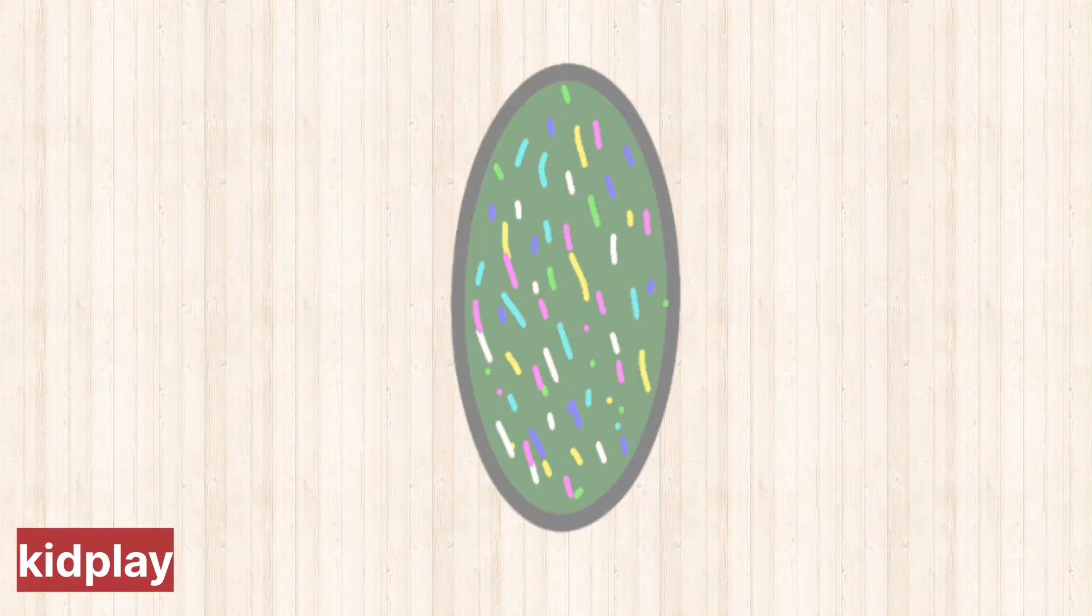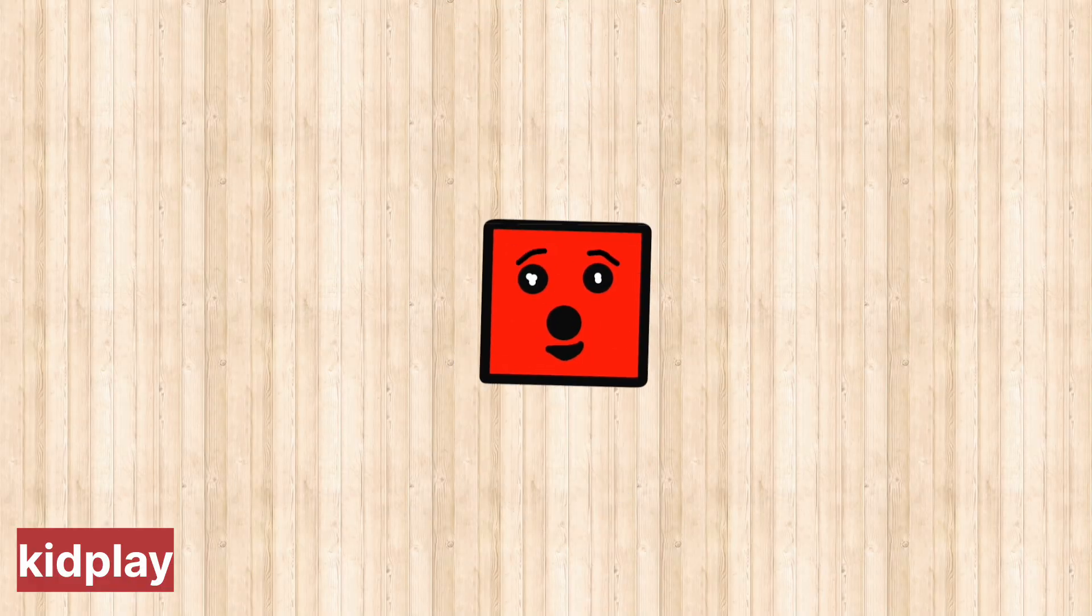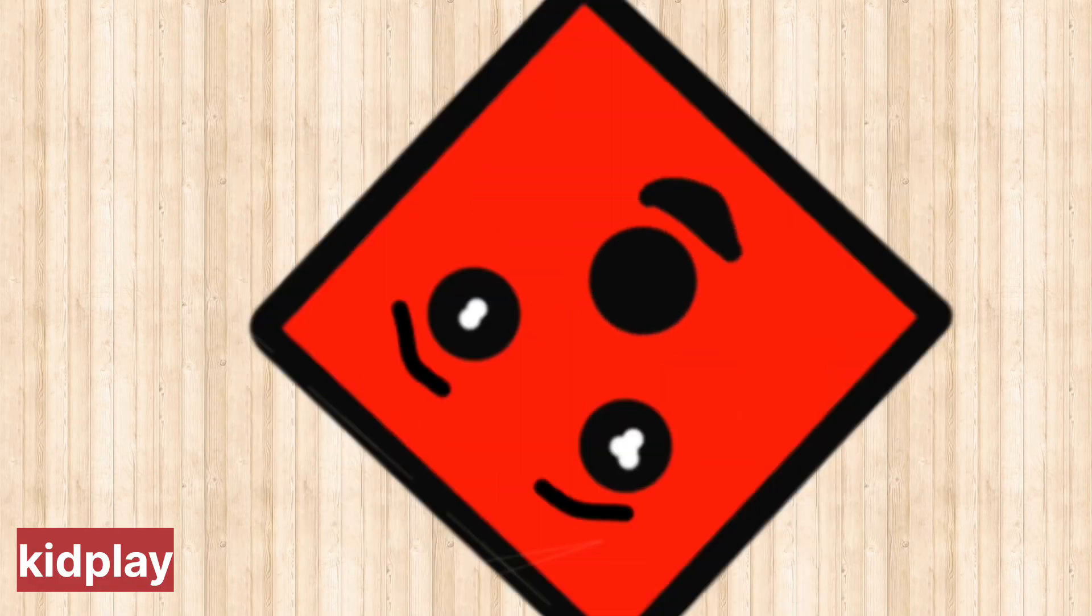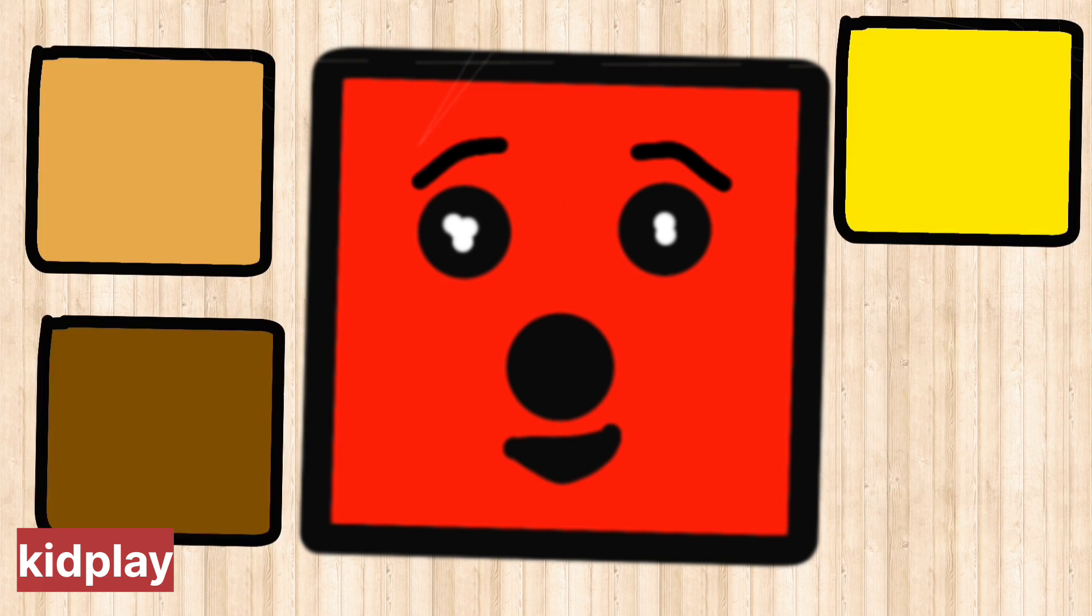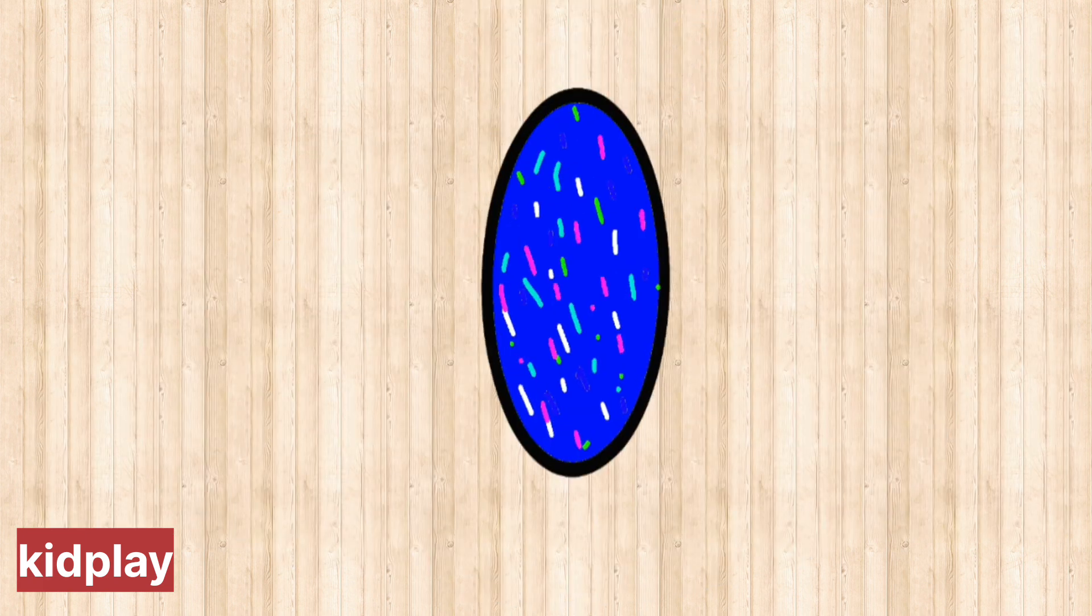Let's open the green egg. Square, square, I am square, I have four sides. Open the blue egg. Rectangle, rectangle.